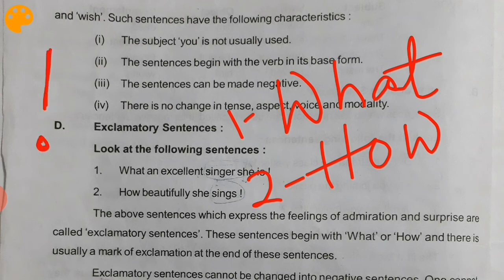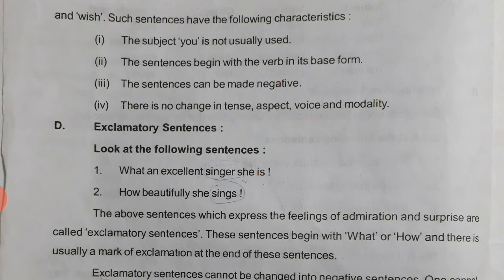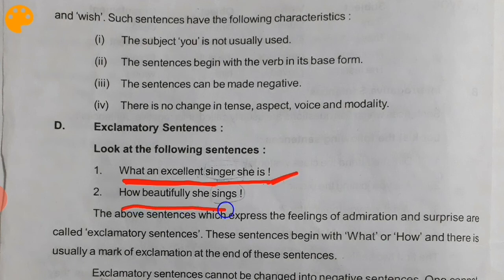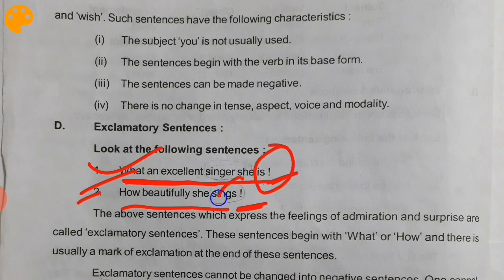For example, 'What an excellent singer she is!' — this is the 'what' type exclamatory sentence, ending with an exclamation mark. 'How beautifully she sings!' — this is the 'how' type exclamatory sentence, also ending with an exclamation mark.